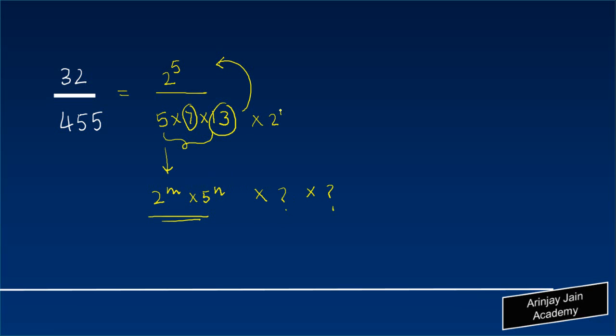So the denominator has some more forms. I can write it as 2 to the power 0 and 5 to the power 1, but it is not only 2 to the power m into 5 to the power n; there are two other components. Which means that when we do a division for these two numbers, what we will get is not going to be a terminating decimal expansion.